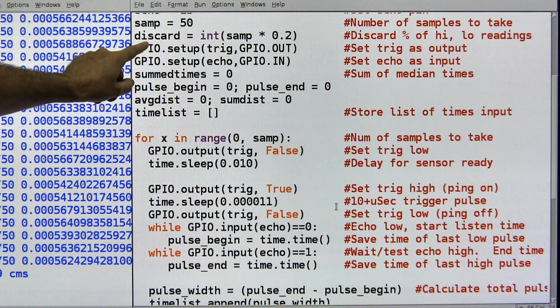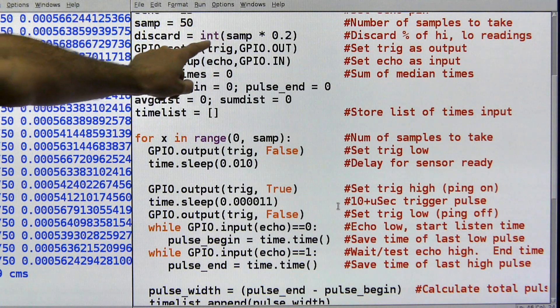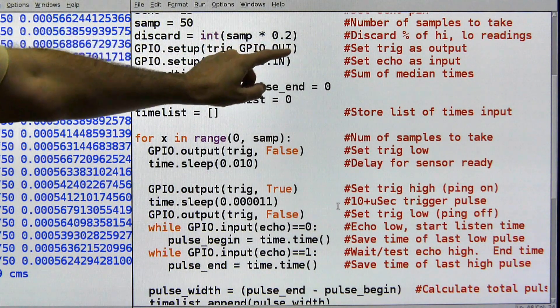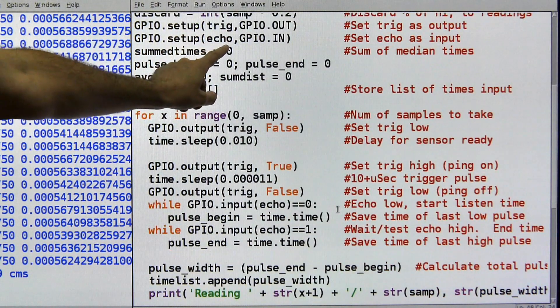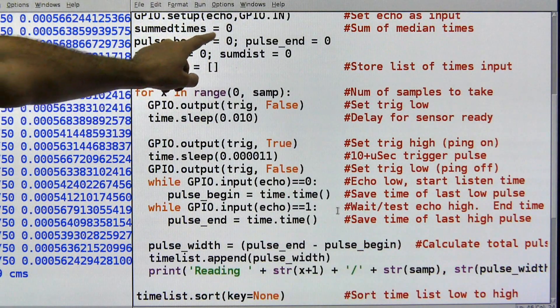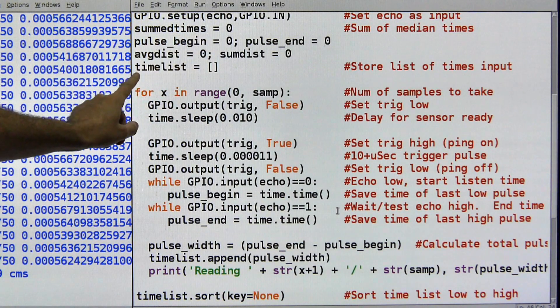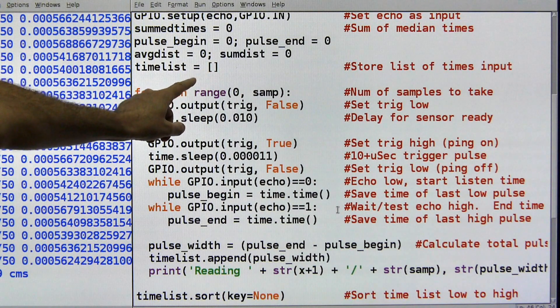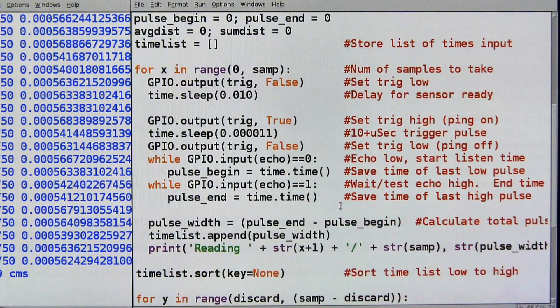I'm going to take 50 samples to get a higher accuracy reading. I'm going to discard a certain number. This is my discard number, and I'm calculating that by the sample size times, in this case 20%. You can make it more or less. Here's where I set up my output pin, the trigger. And here's where I set up the echo, the input. I'm going to sum the median times, and this is just a variable. Some more variables we need to do the math. Here's the time list, so this is going to store my list of input values.